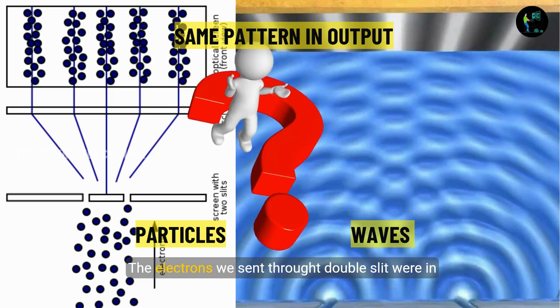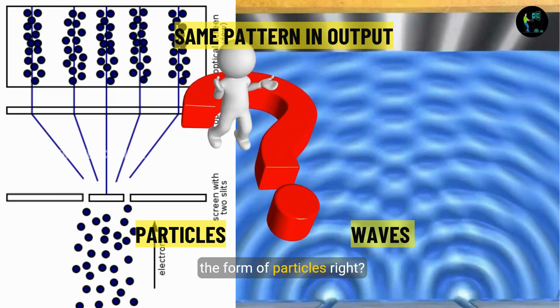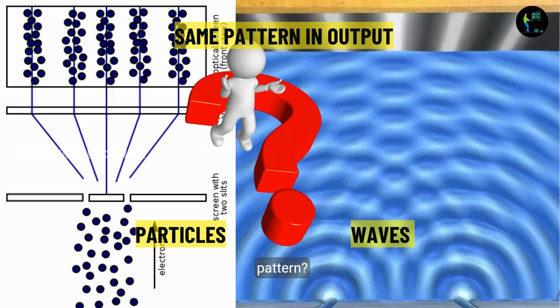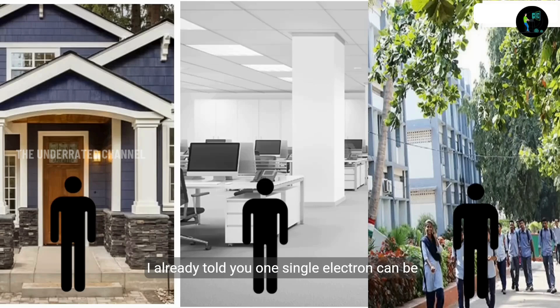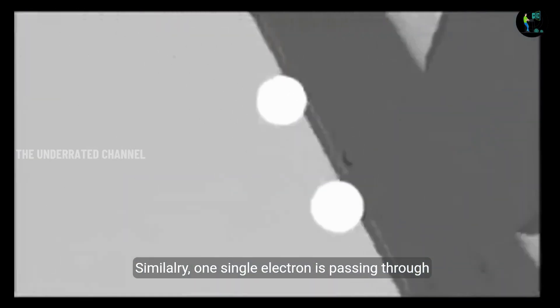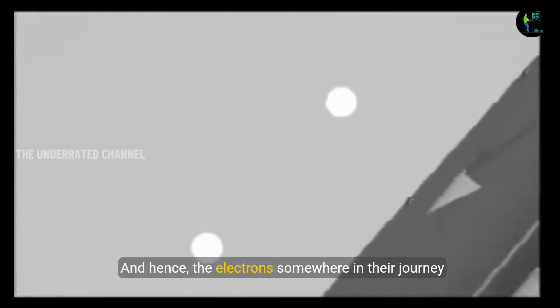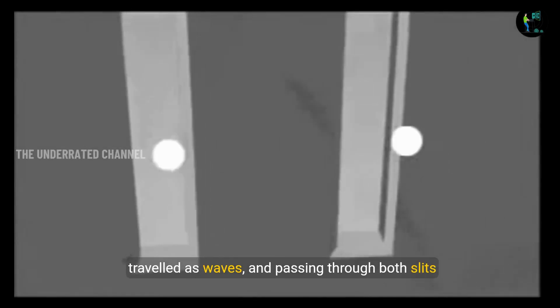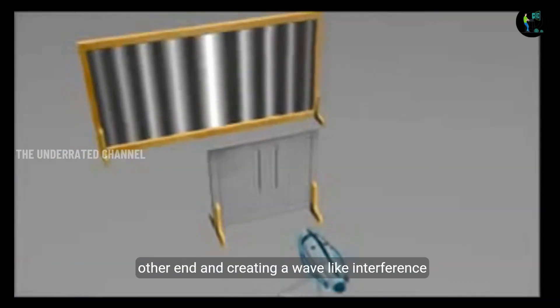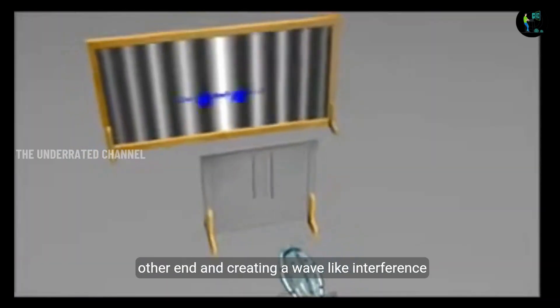The mystery number one. The electrons we sent through double slit were in the form of particles, right? Then why did it create a wave-like interference pattern? I already told you one single electron can be present at multiple places at a time. Similarly, one single electron is passing through both the slits at a time and hence the electrons somewhere in the journey traveled as waves and passing through both slits simultaneously and interfering with each other at other end and creating a wave-like interference pattern.